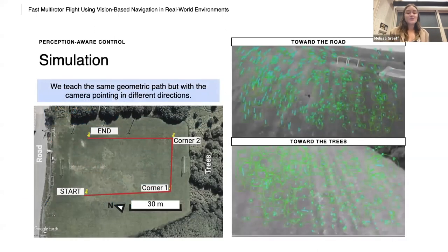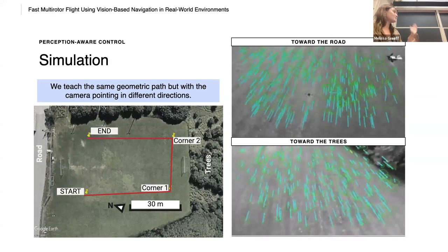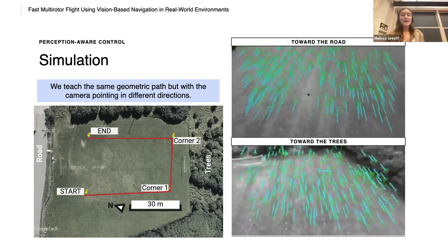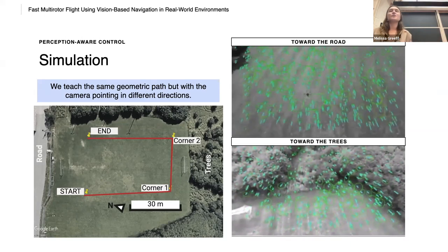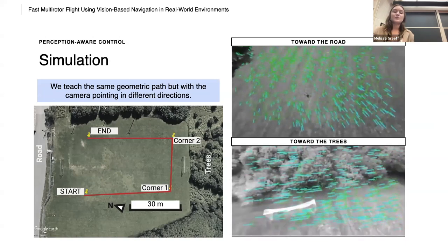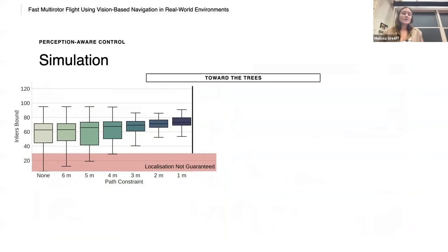So we teach the same geometric path, but with the camera pointing in different directions. So we go from start, corner one, corner two and end. The only difference is in the first case, we face the camera towards the road when we teach. In the second case, we fix the camera towards the trees. So we look at the case when we face the camera towards the trees.